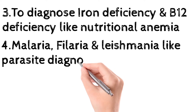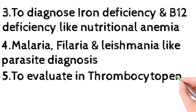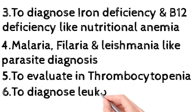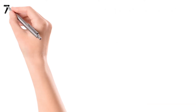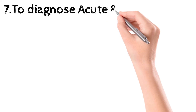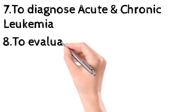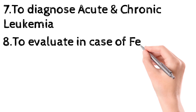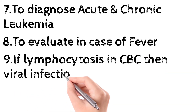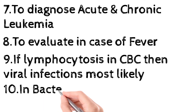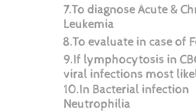Fourth, you can diagnose malaria, filaria, and leishmania — parasitic infestations of blood. Fifth, it is helpful to evaluate cases of thrombocytopenia, i.e., low platelet count. Sixth, it helps diagnose leukocytosis, eosinophilia, and lymphocytosis — abnormal differential count conditions. Seventh, it is important to diagnose acute and chronic leukemias. Eighth, it is helpful to evaluate a case of fever. Ninth, lymphocytosis in CBC suggests viral infection, while neutrophilia suggests bacterial infection.